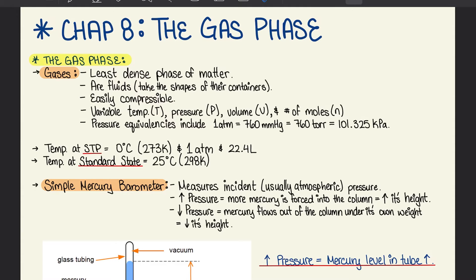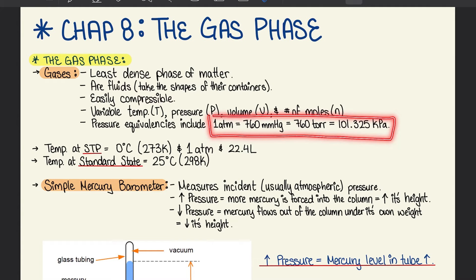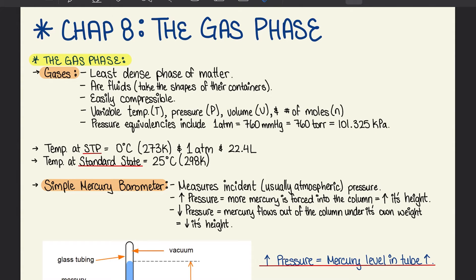Gases are the least dense phase of matter. They're fluid because they take up the shapes of their containers, and they're easily compressible. They have variable temperatures, pressure, volumes, and number of moles. The pressure equivalencies include: 1 atmospheric pressure is equal to 760 mmHg, which is equal to 760 Torr, which is equal to 101.325 kilopascals.